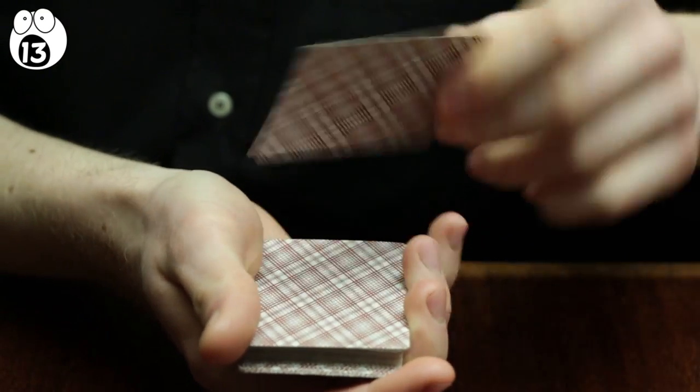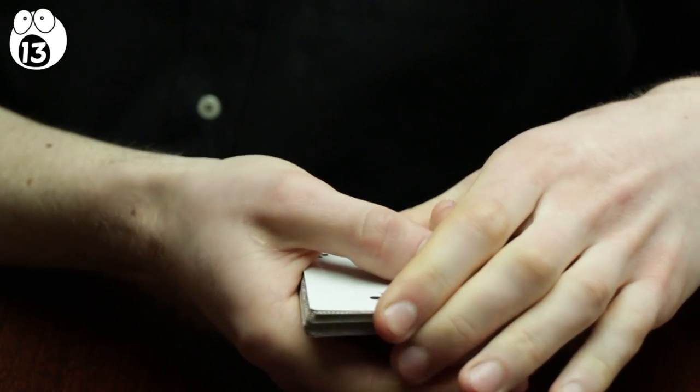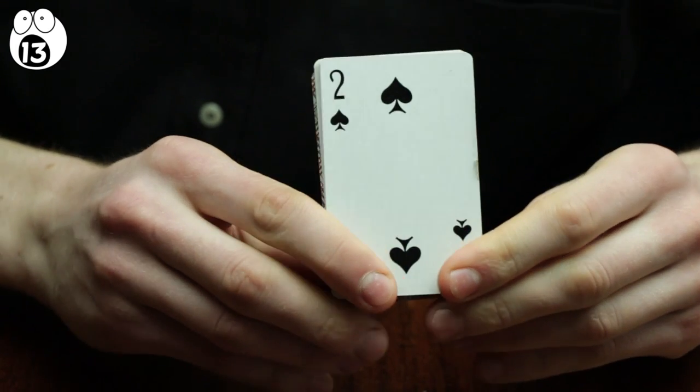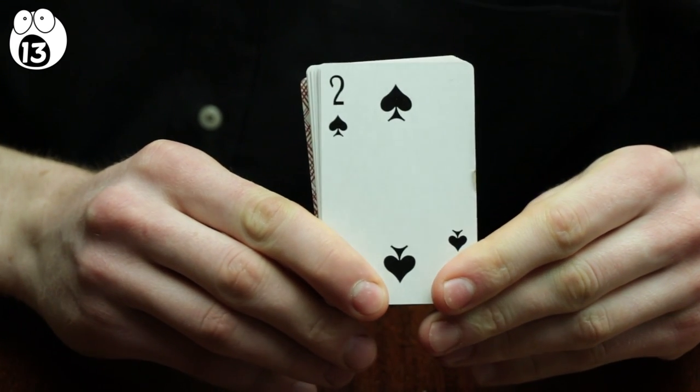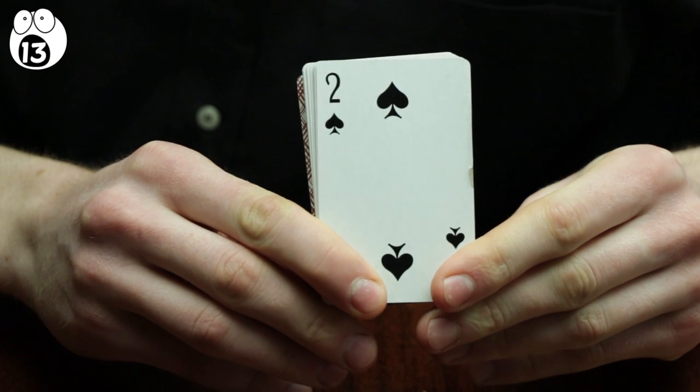Here's how it works. When the deck is placed behind your back, you turn the top card over. That way, when the deck is brought to the front again, the chosen card can be seen. The audience sees the bottom of the deck, but you can see the top.